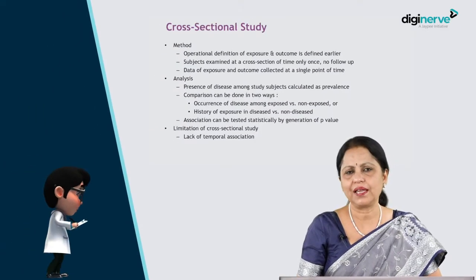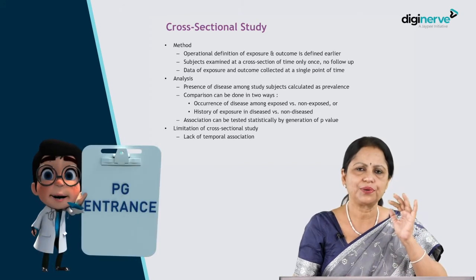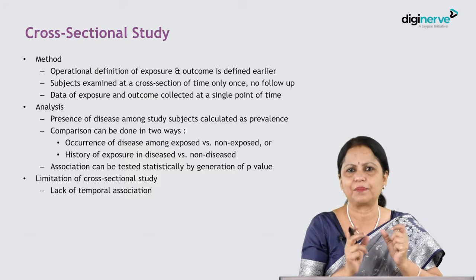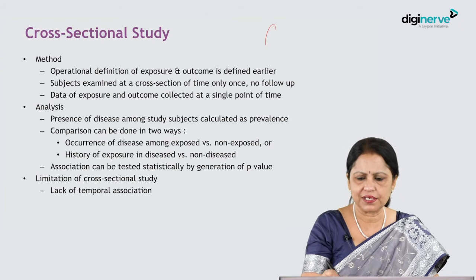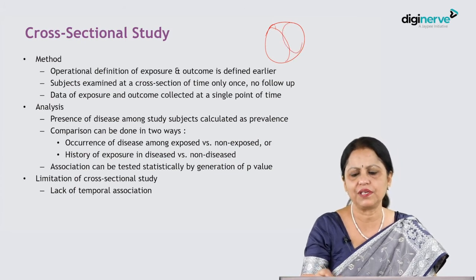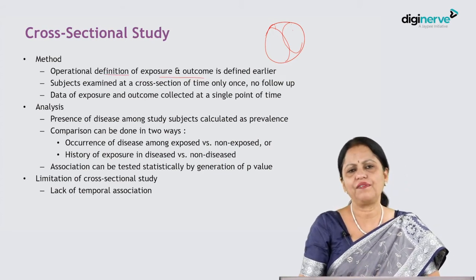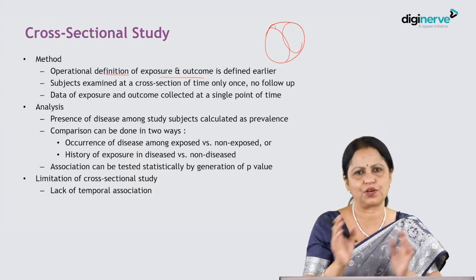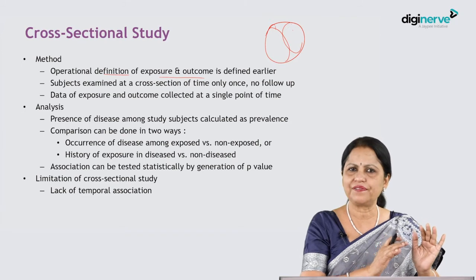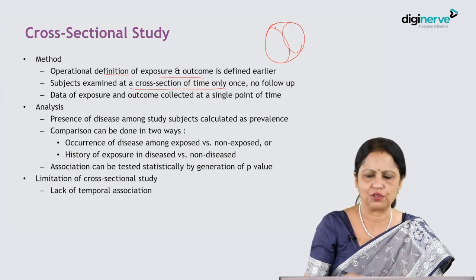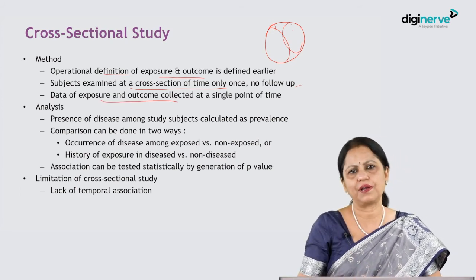The next type is cross-sectional study, which means data collected at one point in time. We observe a whole population and capture whatever exposure and disease are present at that moment. We then have some exposed and some non-exposed, or some diseased and some non-diseased, and compare between these groups. Operational definitions of exposure and outcome must be defined beforehand — who is a case, what counts as exposure — and followed throughout the study. People are seen only once; no follow-up is done.